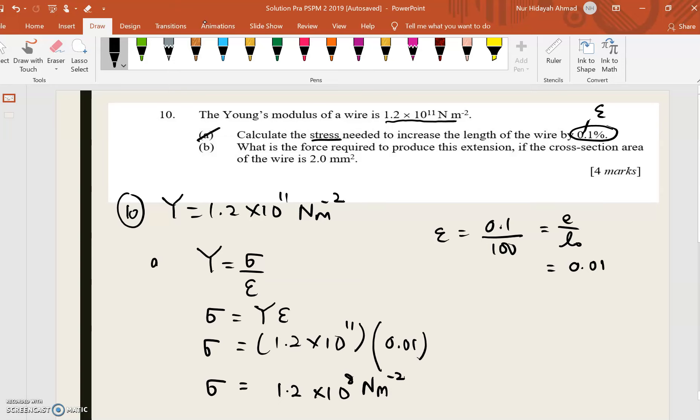That is the solution for A. For B, what is the force required to produce this extension if the cross-sectional area is 2mm square? So here you have to convert millimeter into meter.